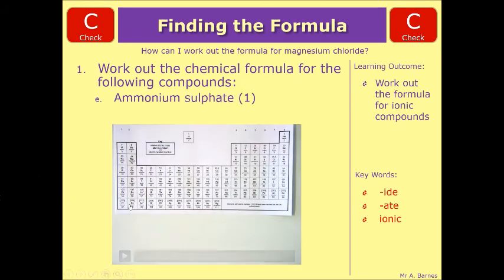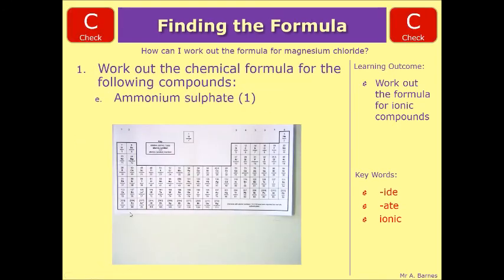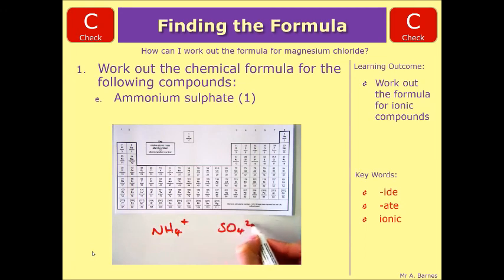And then on to the final one, which is ammonium sulfate. So this one, you don't need the periodic table for. It gave you the question. So what we need to do here is write down the symbols and the ionic equation. So NH4+, SO4 2-.